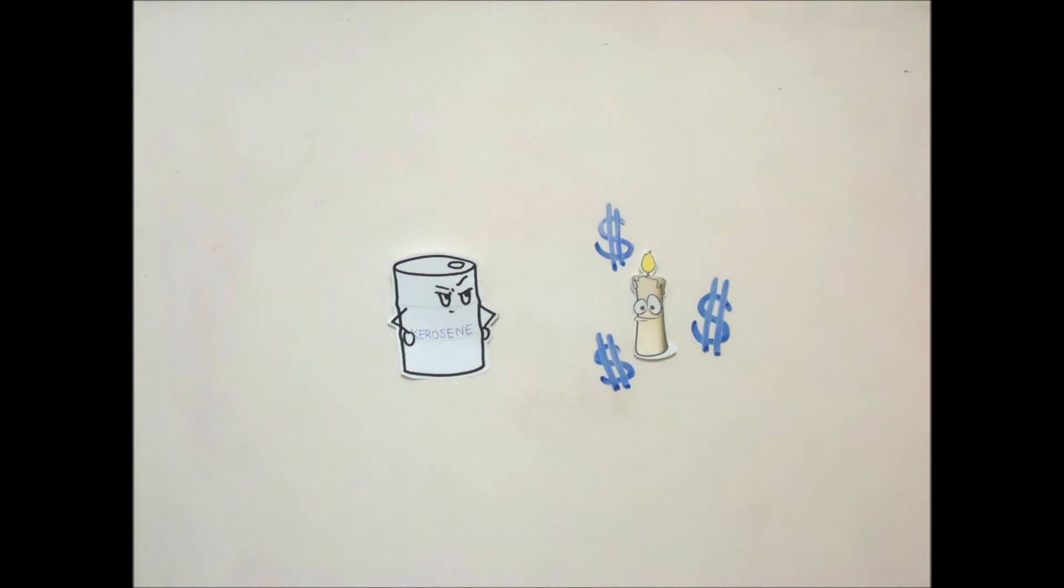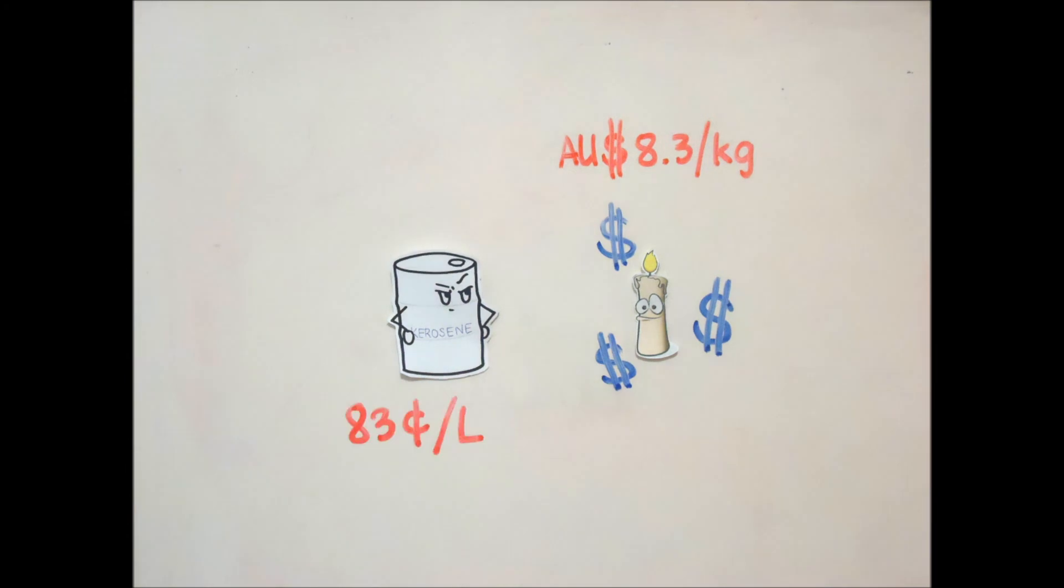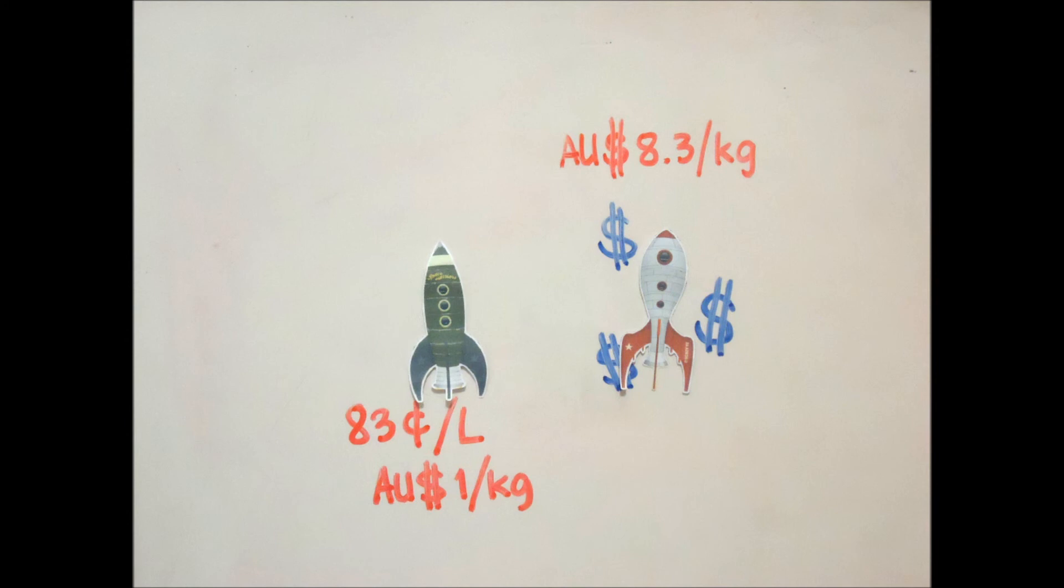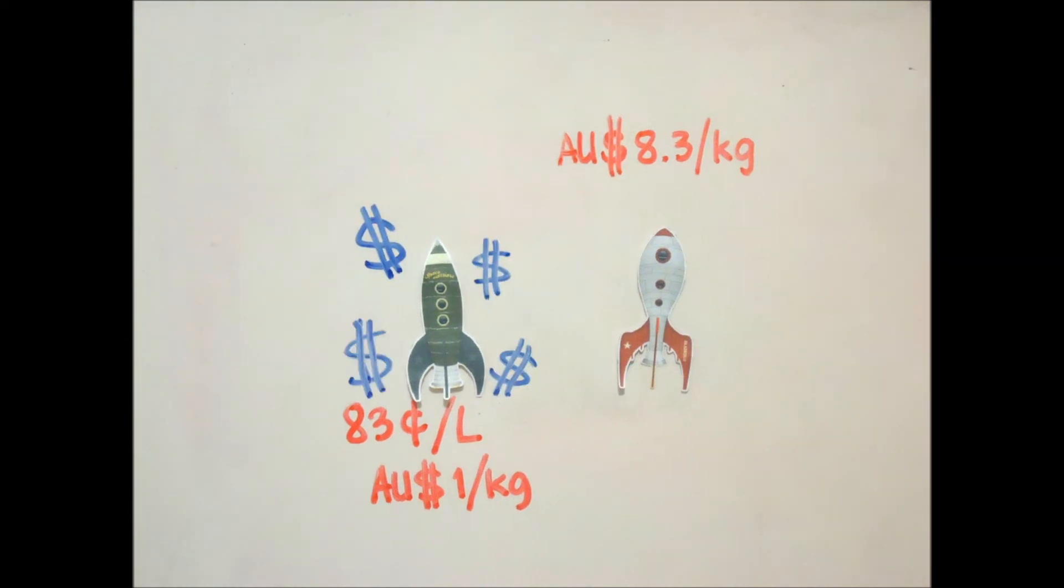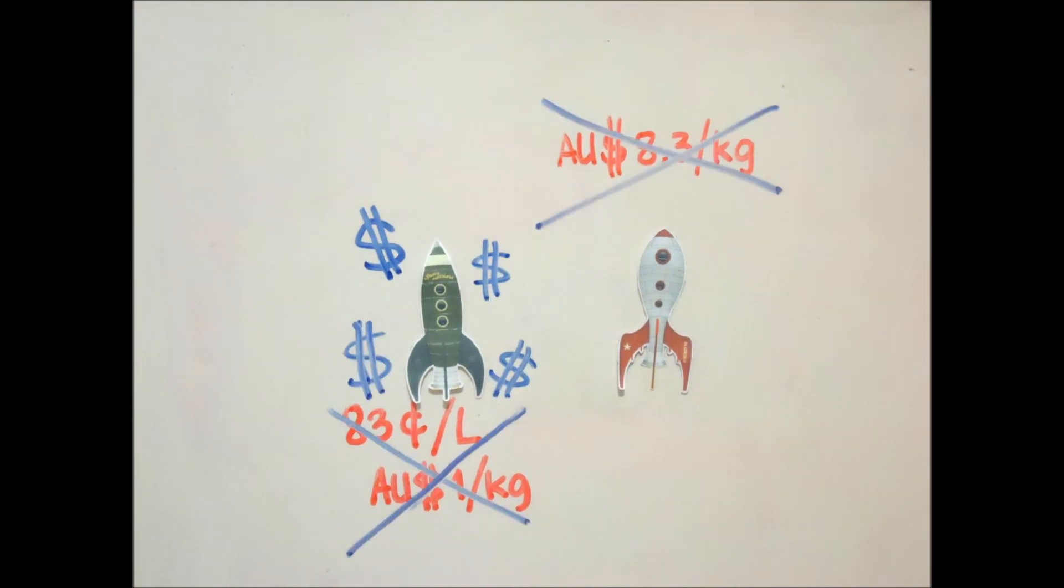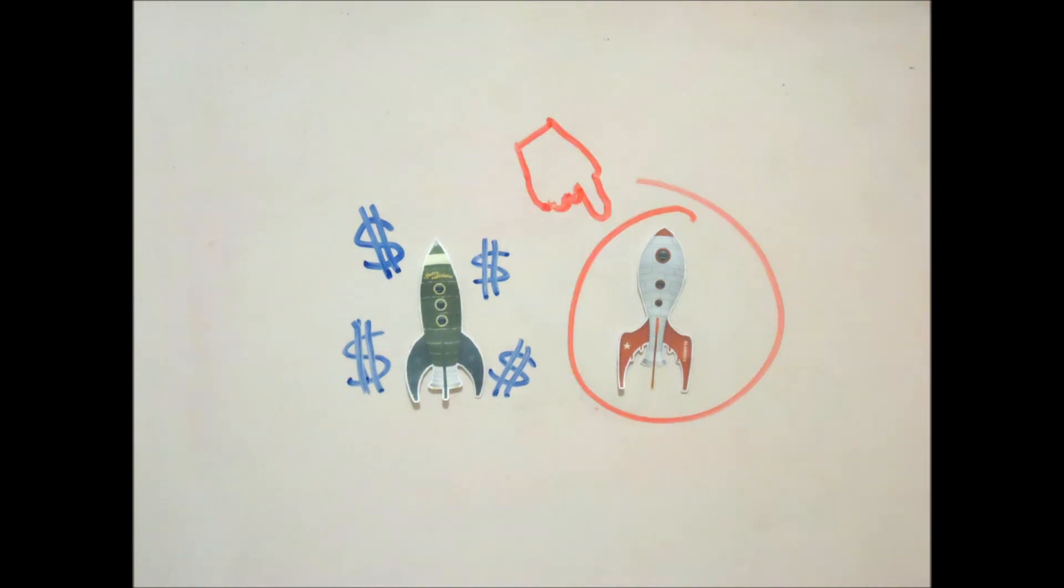The fuel itself, paraffin wax, is actually more expensive than kerosene, costing around 8.3 dollars per kilogram compared to only 83 cents per liter or about a dollar per kilogram of kerosene. But since we're talking rockets, and liquid propellant rockets require a huge sum of money to manufacture, far greater than the cost of its fuel, then technically, using paraffin wax would be cheaper.